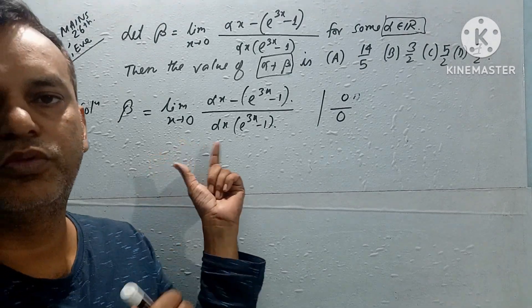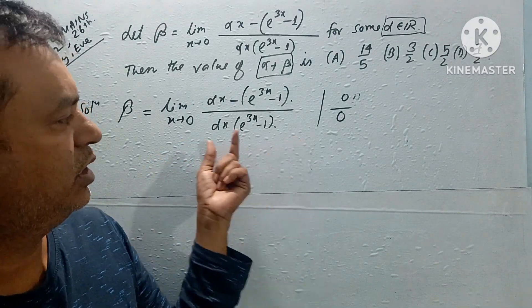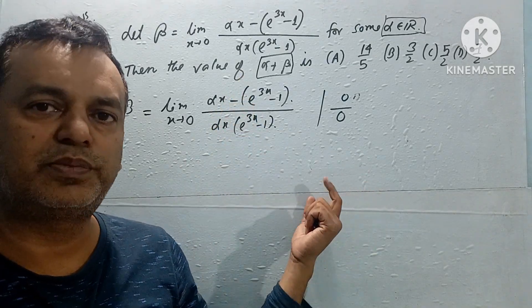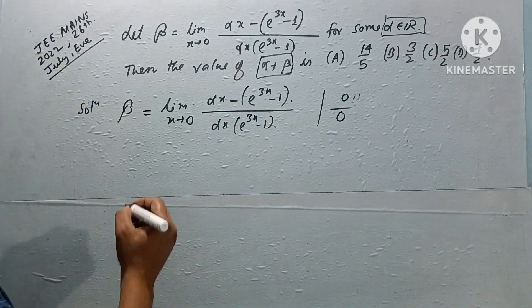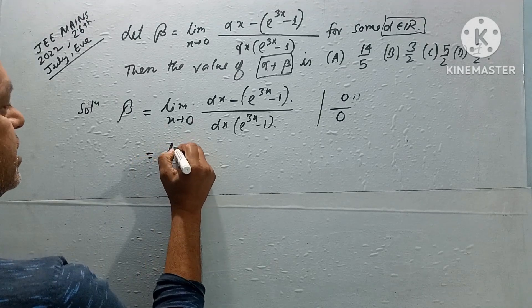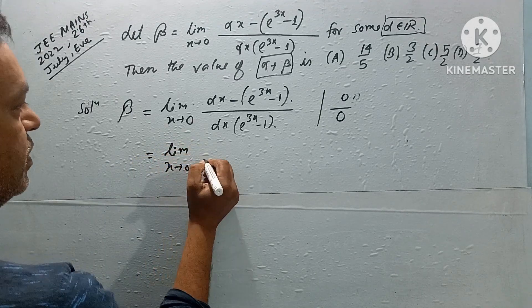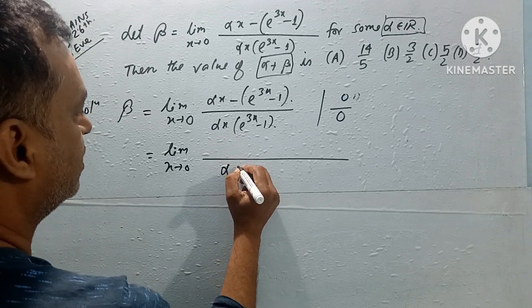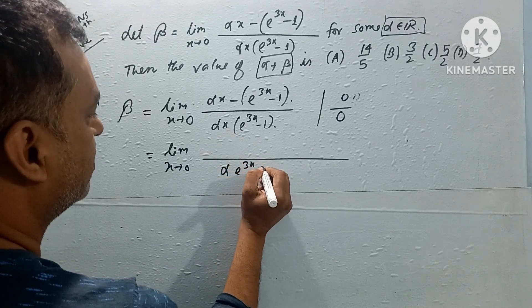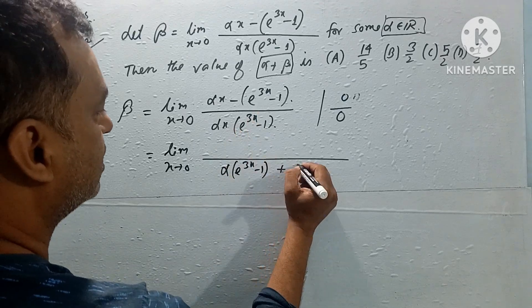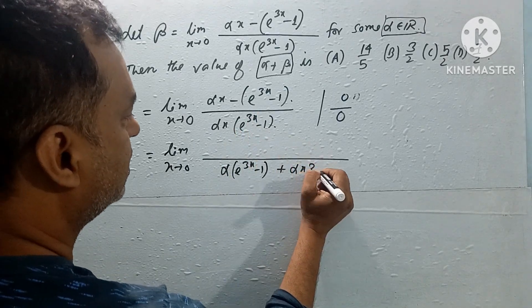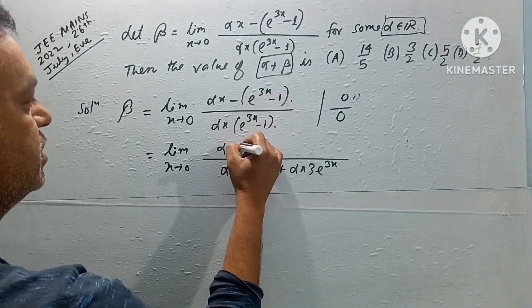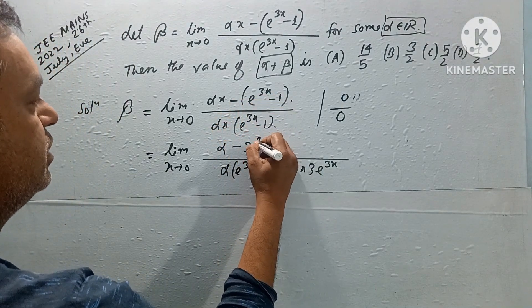So we can use L'Hospital's rule. According to L'Hospital's rule, we differentiate both numerator and denominator with respect to x. After differentiation, the denominator becomes alpha e power 3x minus 1, plus alpha x times 3 e power 3x. The numerator becomes alpha minus 3 e power 3x.